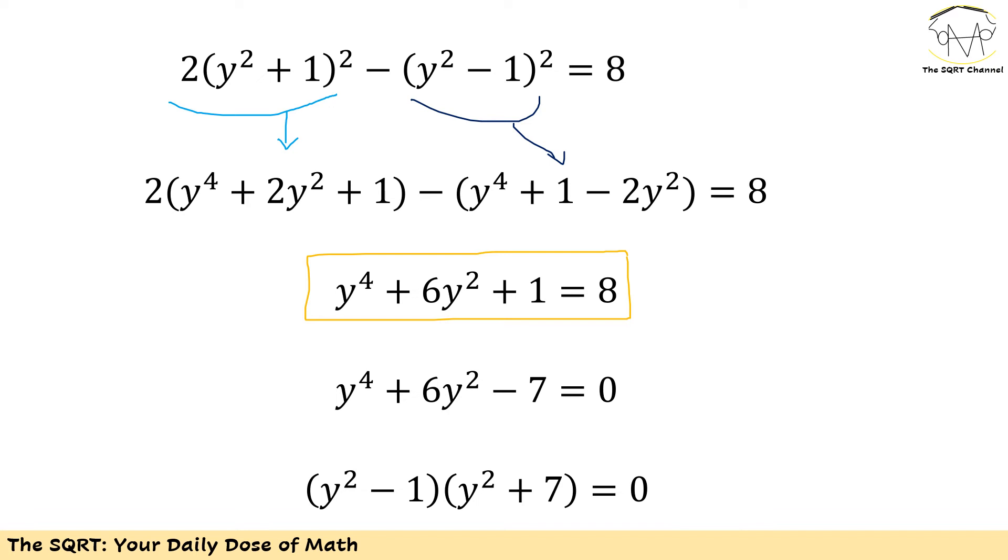This is indeed easy to solve because I only have y to the power of 4 and y to the power of 2. If you just use an identity that you remember, we're going to end up writing (y^2 - 1)(y^2 + 7) = 0.